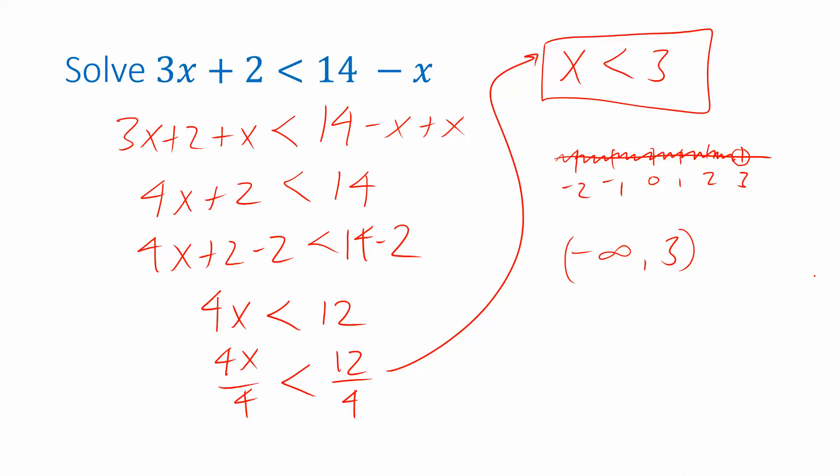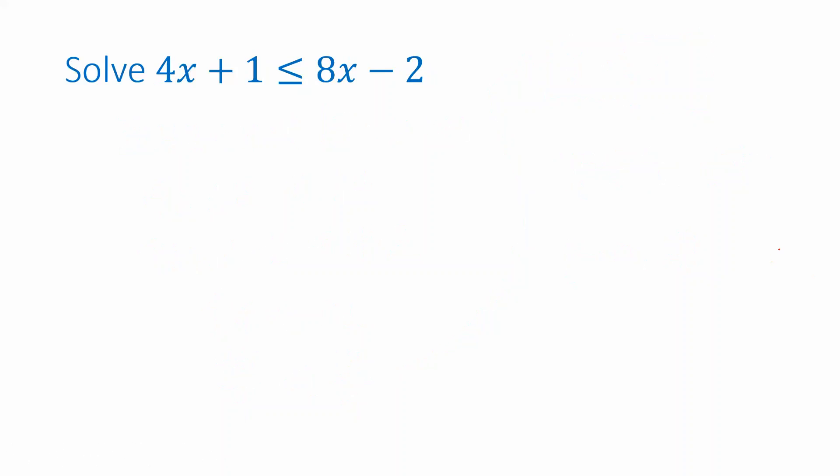Alright, let's do another example. This time I have an inequality of the form less than or equal to. The previous one was just less than. Now we have less than or equal to. But we treat it the same way. Let's approach this the same way we just did. So I want to maybe get all of my x's on the left side and all of my numbers that don't involve an x on the right side. So on the left to get rid of that plus one I'll subtract one. But I have to do that from both sides. So I have 4x on the left is less than or equal to 8x minus 2 minus 1 combines to give me minus 3.